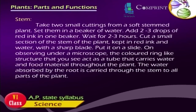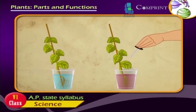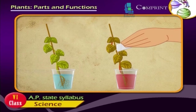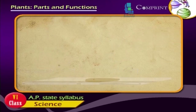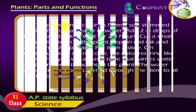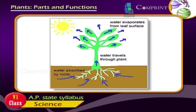Take two small cuttings from a soft-stemmed plant and set them in a beaker of water. Add two to three drops of red ink in one beaker. Wait for two to three hours. Cut a small section of the stem of the plant kept in red ink with a sharp blade and put it on a slide. On observing under a microscope, the colored ring-like structure acts as a tube that carries water and food material throughout the plant.